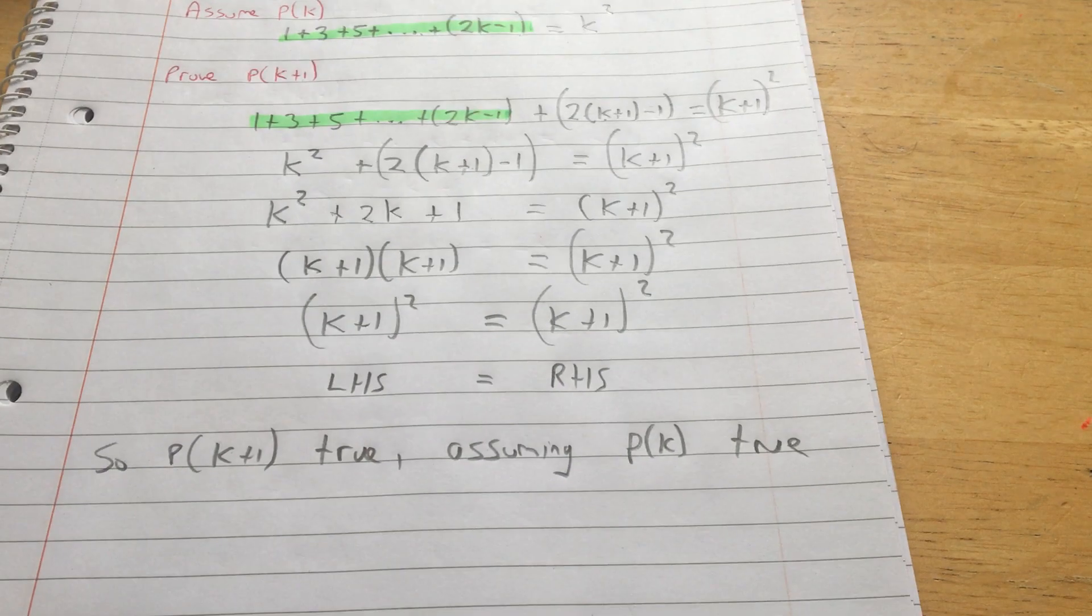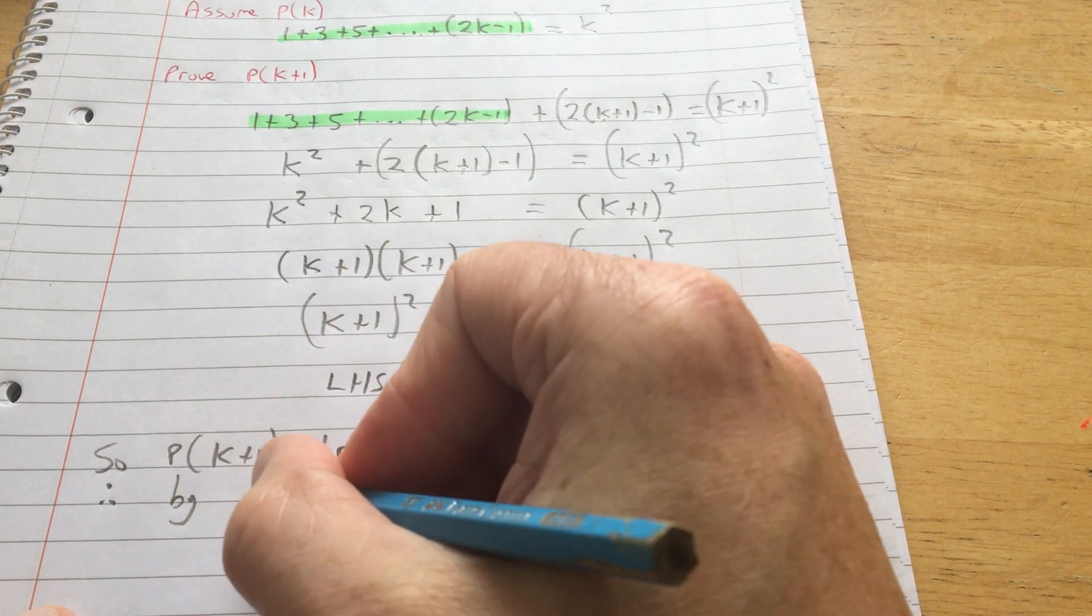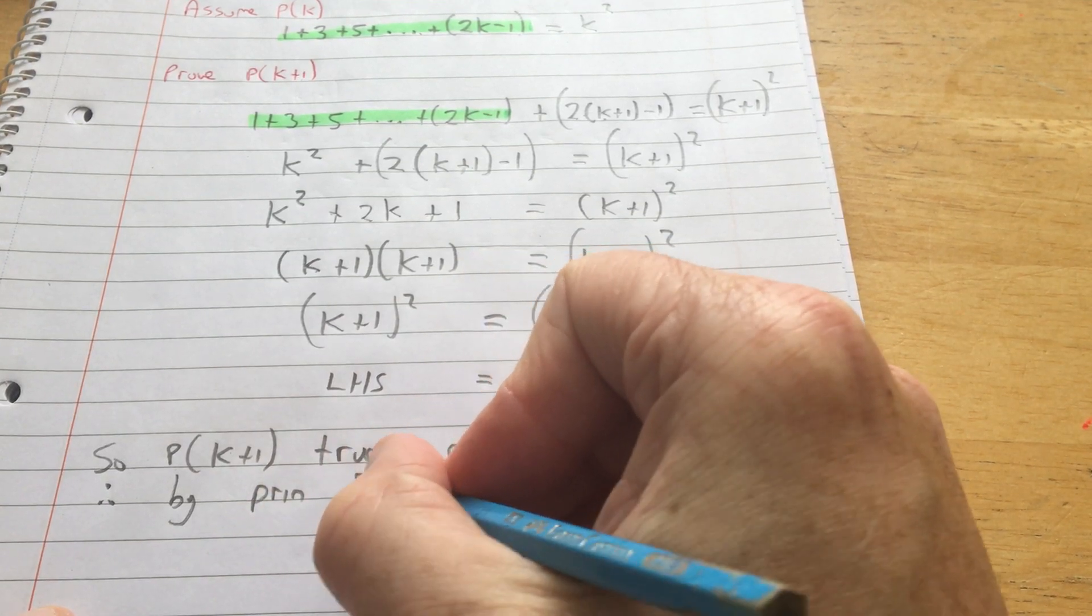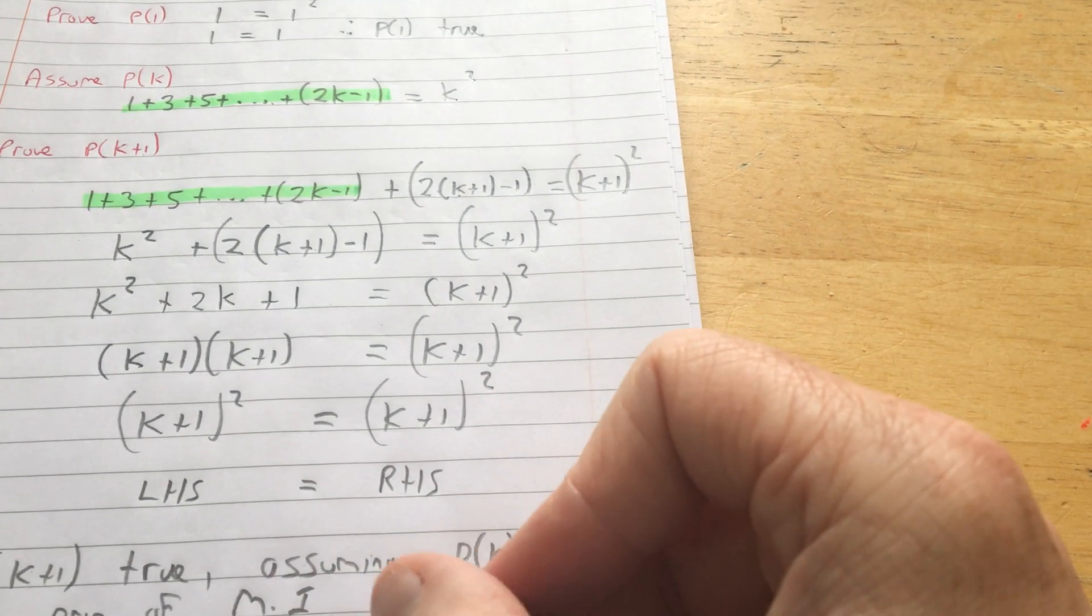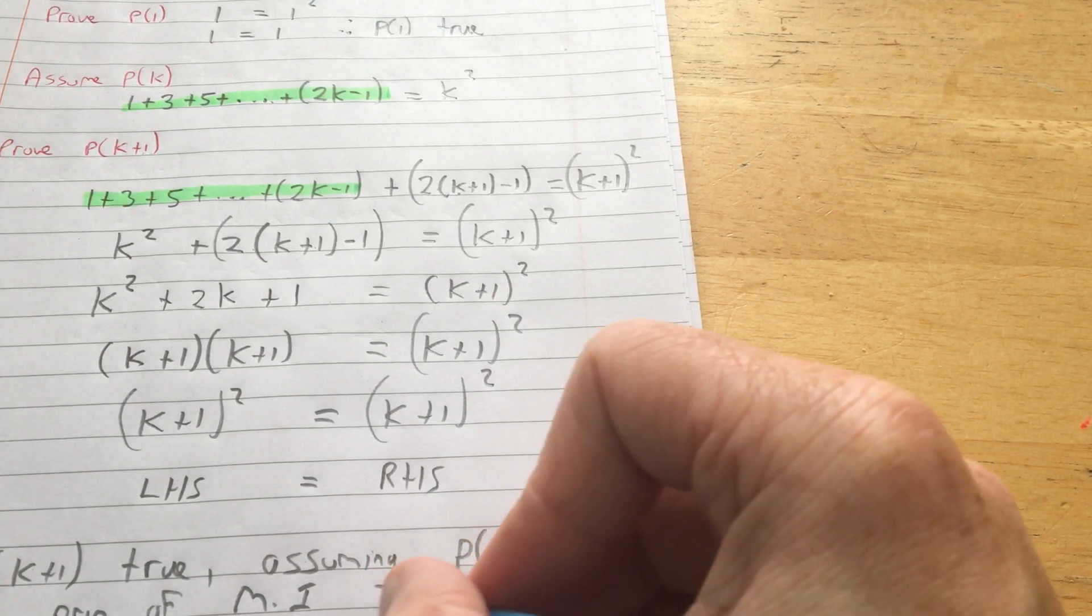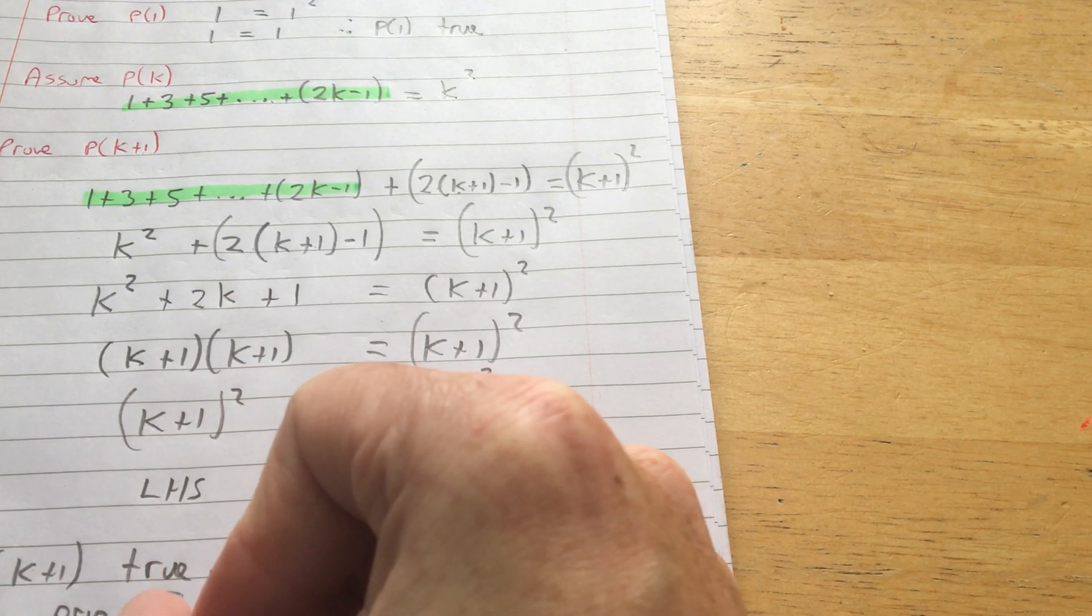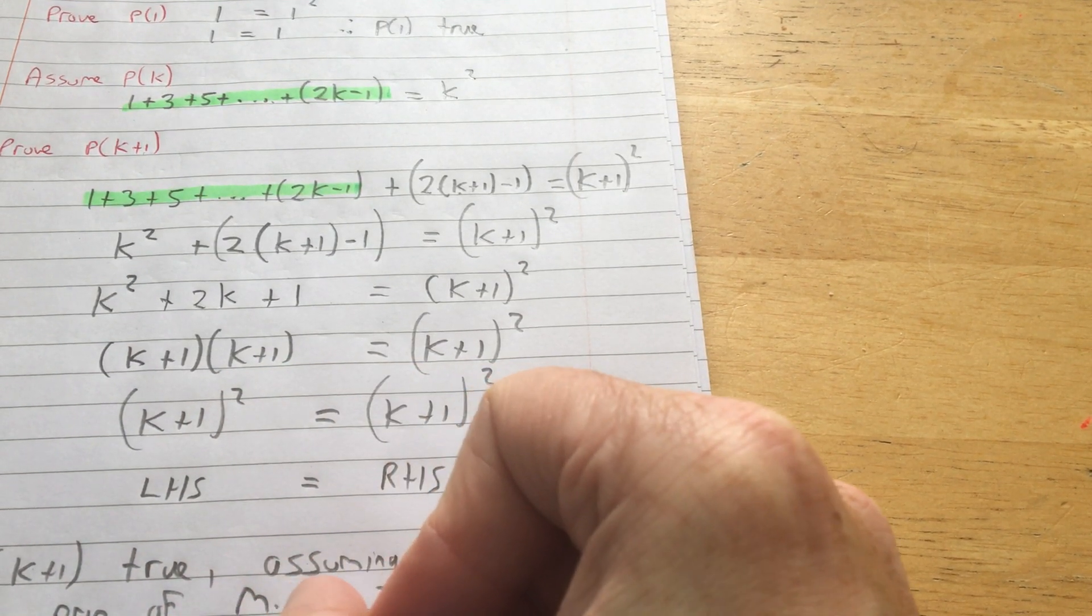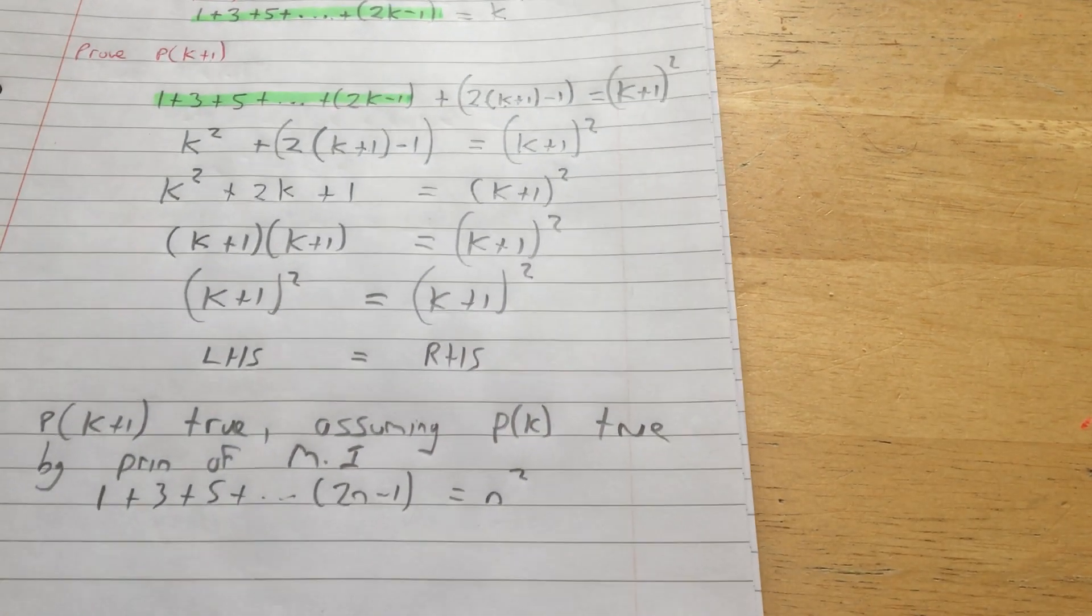Therefore, by the principle of mathematical induction, 1 plus 3 plus 5 plus 2n minus 1 is equal to n squared for all values of n.